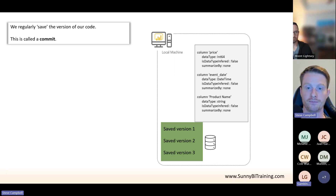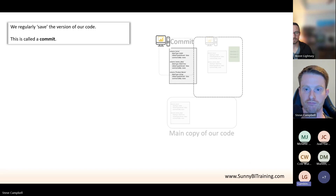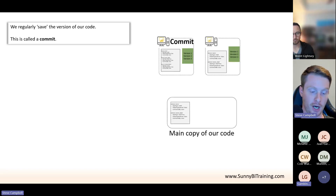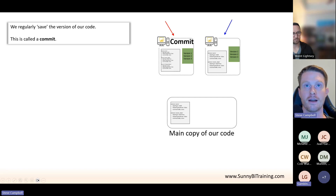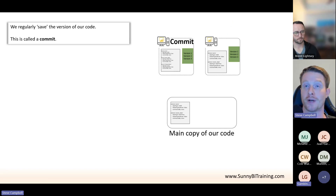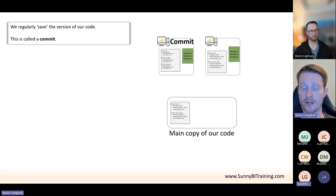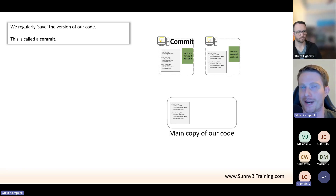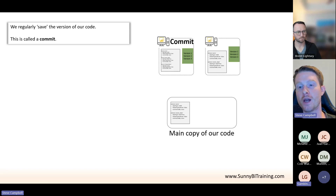This is us working on our local machine. The whole point is that there are other people working on their local machines as well — that's why it's distributed. We all have copies we're working on independently. We want to have a main copy of our code in the cloud somewhere that we can all access. A big thing of Git being distributed is we can all work on our local machines offline and then sync up.